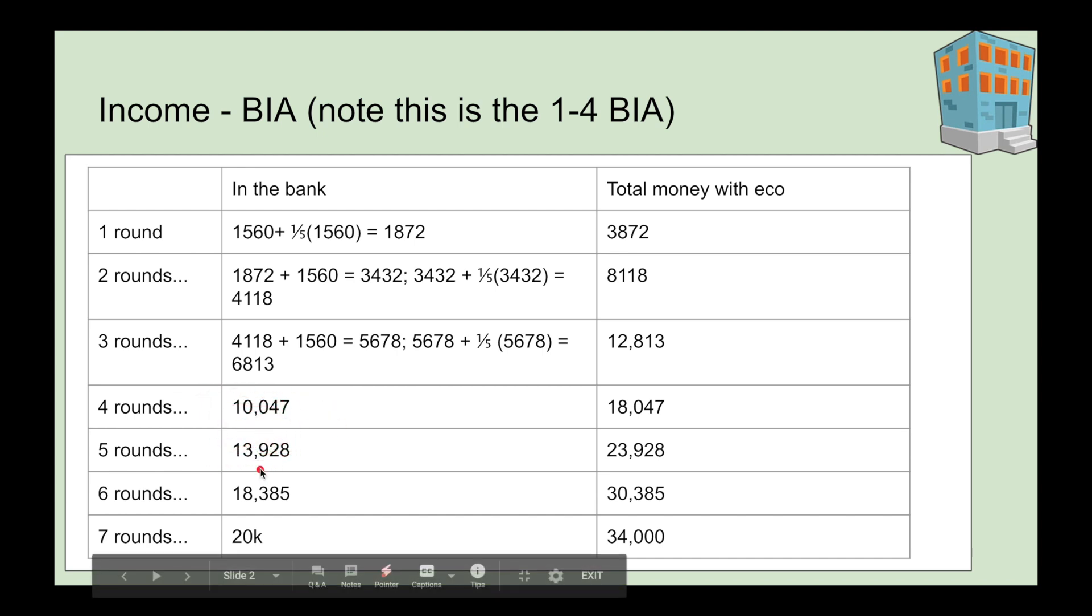Four rounds, $10,000. After five rounds, $13,000. After six rounds, $18,000. After seven rounds, $20,000, which it will max out at. You can check my math right here.